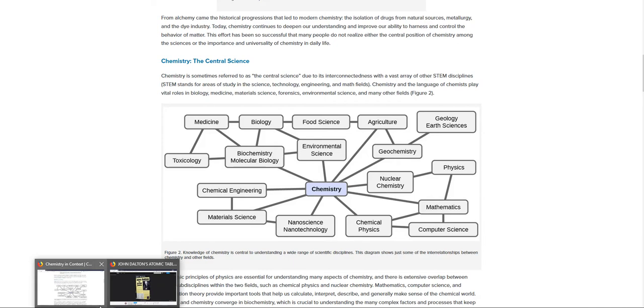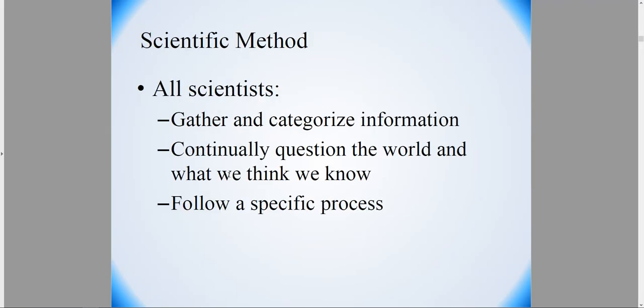Next, the next thing I want to talk about is a little bit about the scientific method. And in my opinion the scientific method is kind of overblown and sounds more important than it actually is. This is how human beings think. You could actually make an argument that this is how any living thing thinks. So scientists gather and categorize information. They continually question the world and what we think we know and they follow this scientific process.